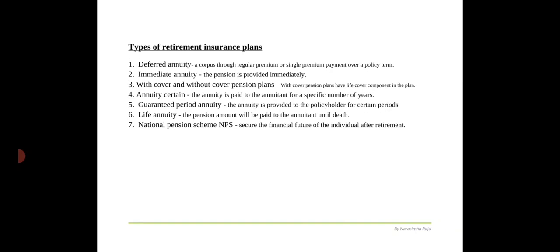In a deferred pension plan, only one-third of the corpus is tax-free on withdrawal, while two-thirds of the corpus is taxable. The next is immediate annuity — under an immediate annuity scheme, the pension is provided immediately. The policyholder pays a lump sum amount and the pension is provided instantly by the insurance company. Under the immediate annuity pension scheme, the insured can choose from a range of annuity options. The nominee of the policy is entitled to receive the money in case of death of the insured during the tenure of the policy.